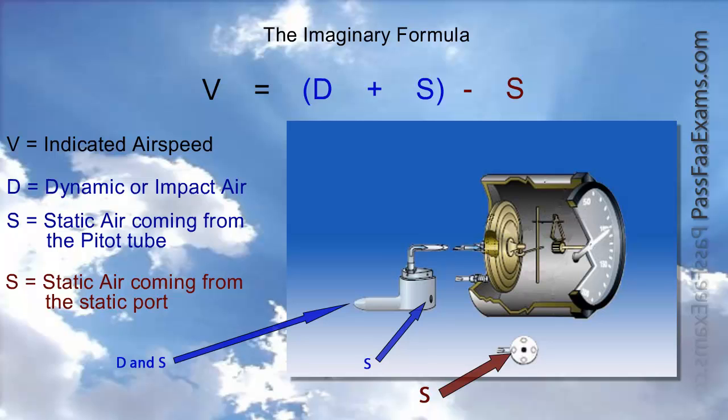If the pitot tube and drain hole block, we would have V equals 100 plus 27.92 fixed value, it will not change anymore, minus 27.92, which varies depending on the outside pressure. If we climbed 1000 feet, the formula would be V equals 100 plus 27.92 minus 26.92, or V equals 101. So, as we climb, the airspeed reads higher, and as we descend, lower, just like an altimeter.